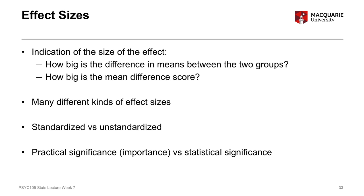Effect sizes are very useful things to interpret and to report because they give us an idea of how big a particular effect is. That effect could be a difference between the means of two groups, or how big the mean difference score is in terms of the t-test. For example, if there's a difference in time that women versus men spend doing housework, is it 15 minutes on average or three hours on average?